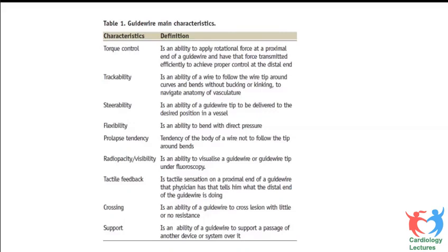Crossing refers to the ability of the guidewire to cross the lesion with little or no resistance, slipping through without touching or penetrating the intima. Finally, the most important characteristic for tough lesions is support — the ability of the guidewire to support passage of another device such as a stent, rotoblator, microcatheter, or balloon. It's not about the wire itself, but what can be carried on it. In summary, there are nine characteristics: torque control, trackability, steerability, flexibility, prolapse tendency, radio opacity, tactile feedback, crossing, and support.